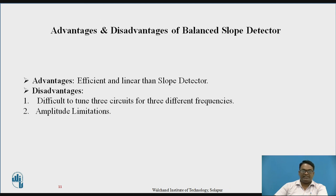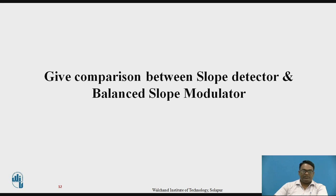Regarding the advantages and disadvantages of the balanced slope detector: a basic disadvantage is that it is very difficult to tune three circuits for three different frequencies — capacitors C2 and C3 are tuned for the input signal, and C1 is tuned for the carrier. There are also amplitude limitations. As a homework question: write a comparison between the slope detector and the balanced slope detector.